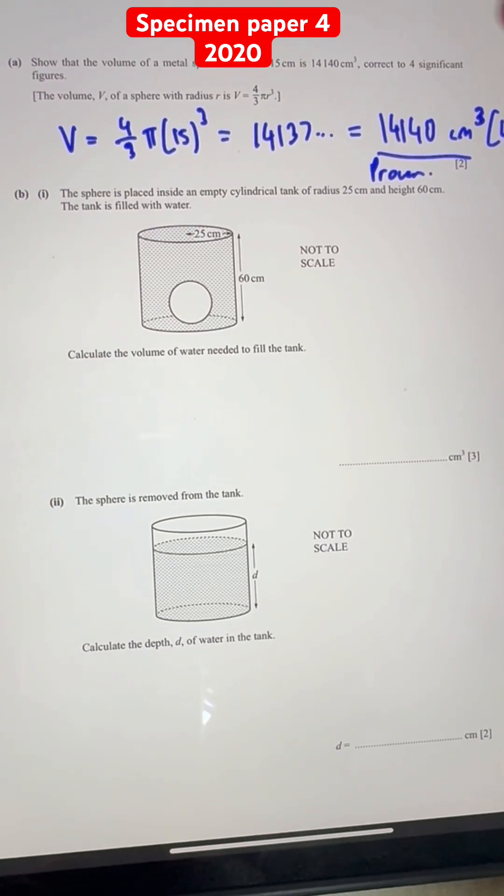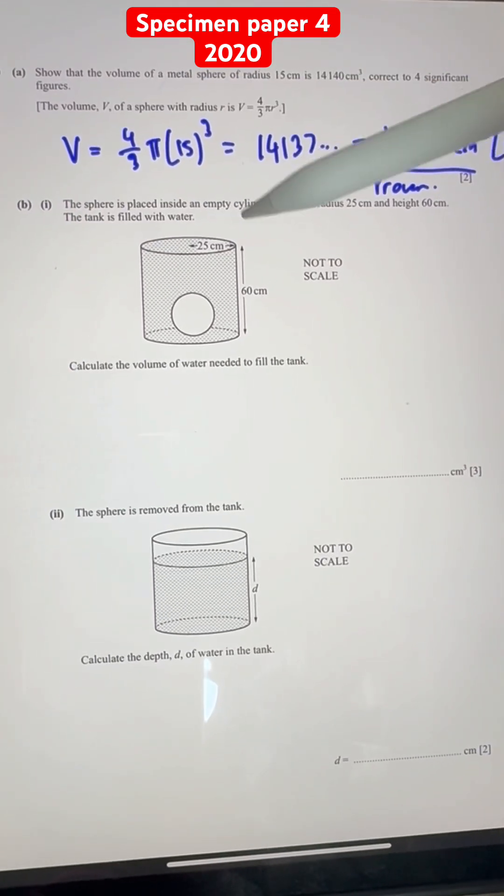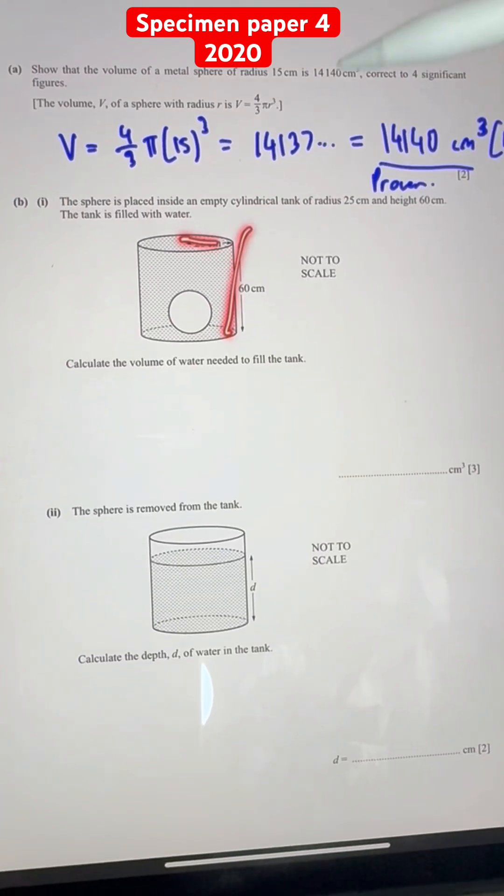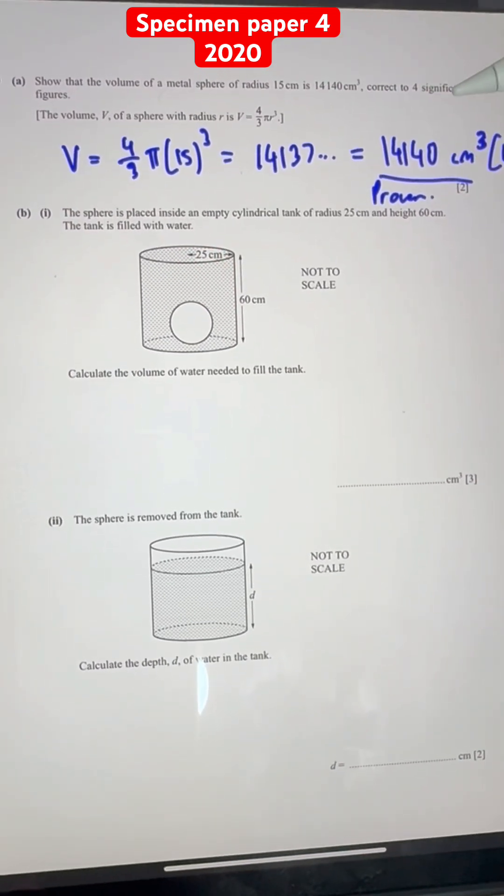Now for part b, the sphere is placed inside an empty cylindrical tank of radius 25 cm and height 60. The tank is filled with water. Calculate the volume of water needed to fill the tank.